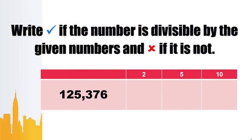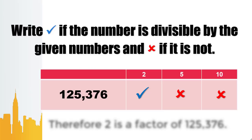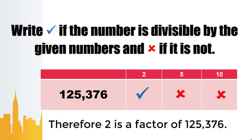Now, going to the divisibility test. Is 125,376 divisible by 2? Yes, since the digit on the 1's place is even. How about 5? No — the digit on the 1's place is neither 5 nor 0. How about 10? No — the digit on the 1's place is not 0. Therefore, from 2, 5, and 10, only 2 is a factor of 125,376.